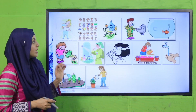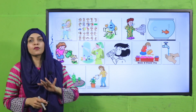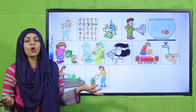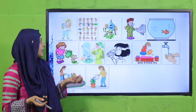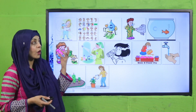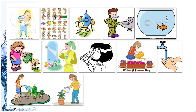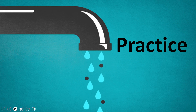Here are all the things for which we need water in our daily lives: for drinking, for toilet, for brushing our teeth. Even animals need water. We use it for watering plants, washing, and many other things. We need water for all these things.